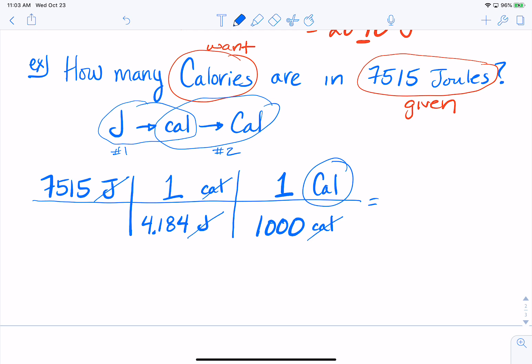Now I do the math. 7515 times 1 times 1. Who cares? I don't have to do that. Divided by 4.184 and divided by 1,000. So could someone do that math for me? What did you get? 7,515 divided by 4.184 and divided by 1,000. 1.796128107. Gabe, you second that? Alright.